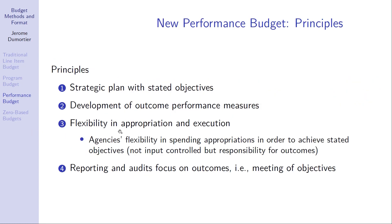There is also what is called a new performance budget. It starts with a strategic plan stating objectives, then develops outcome performance measures consistent with that plan. The new performance budget leaves a lot of flexibility to agencies on how they actually spend money, as long as they achieve the established objectives or performance measures. At the end of the budget cycle, outcomes are reported and audited — the focus is not on the amount of money spent but on whether the outcomes have actually been achieved.